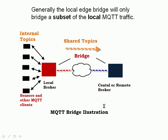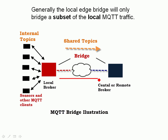Here's a diagram to illustrate that. We have an internal network, and most of the traffic happens on this internal network. We connect a subset of the traffic across the Internet or across a wide area network to a remote broker. This is the bridge connection across the wide area network or the Internet.